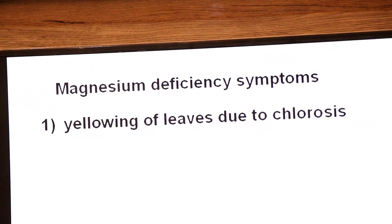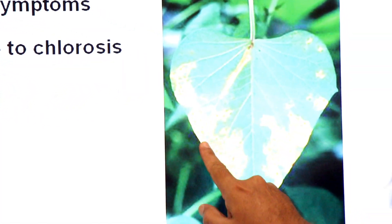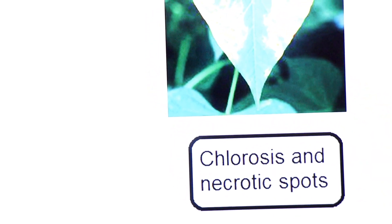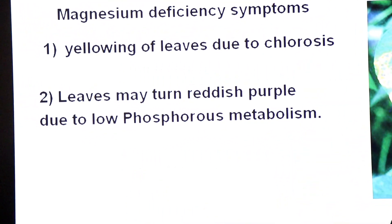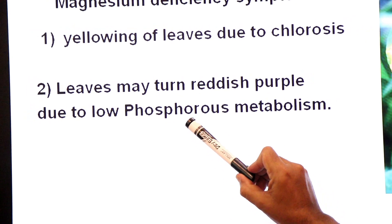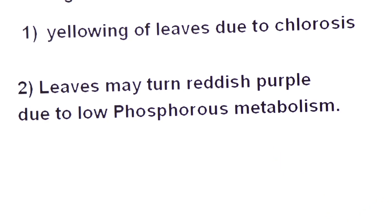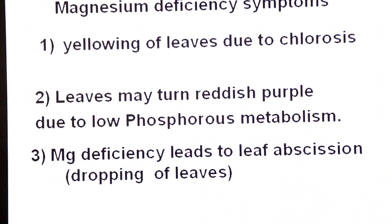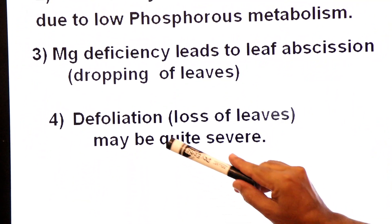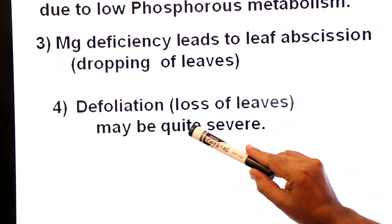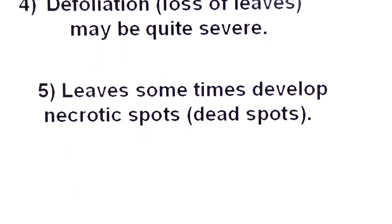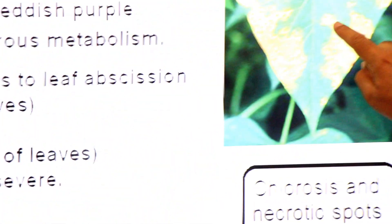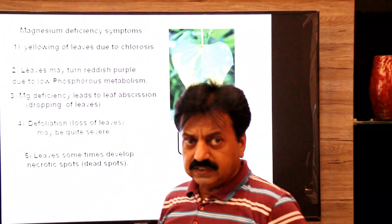Now magnesium deficiency symptoms: first, yellowing of leaves due to chlorosis — loss of chlorophyll — visible on the margins. Second, necrotic spots appear — dead spots — due to necrosis and cell death. Third, leaves may turn reddish-purple due to low phosphorus metabolism, because magnesium mobilizes phosphorus as its carrier. Fourth, magnesium deficiency leads to leaf abscission — dropping or shedding of leaves — and severe loss of leaves is called defoliation. Fifth, leaves sometimes develop necrotic dead spots due to the process of necrosis, meaning cellular death.